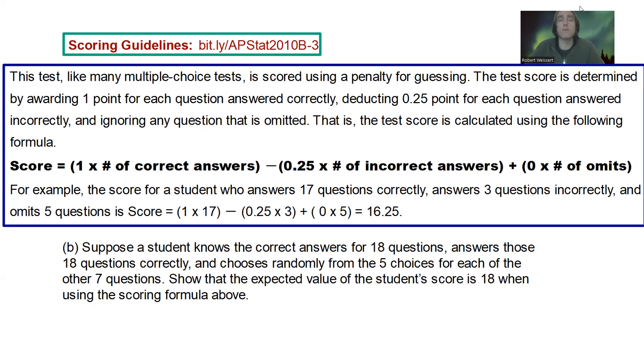For example, the score for a student who answers 17 questions correctly, answers three questions incorrectly, and omits five questions, is scored one times 17, minus 0.25 times three, plus zero times five, equals 16.25, since they omitted five questions. Get the gist.